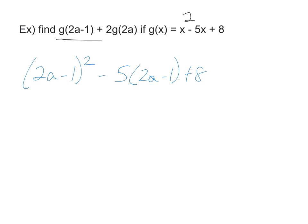Now I'll do my second part, which would be plus 2 times the entire thing, which would be 2a squared minus 5 times 2a plus 8.